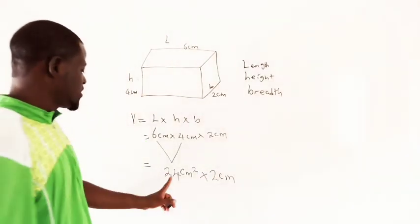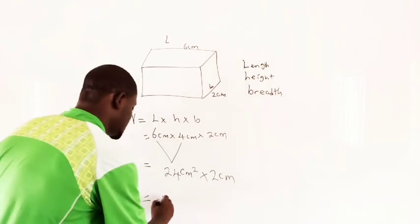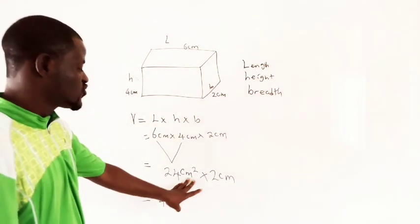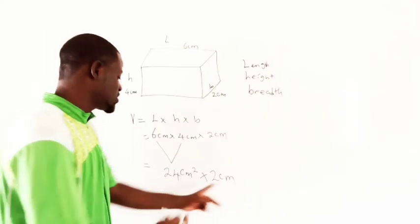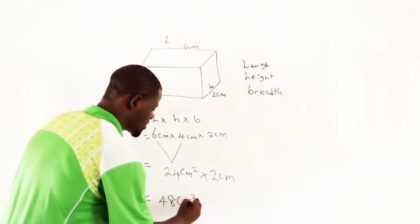So now 24 times 2 is 48. Here we have square cm and cm coming together. We have 2 here, and this one is going to be cubic cm.